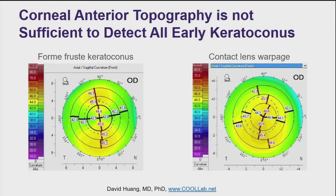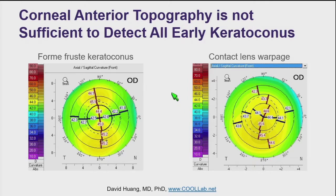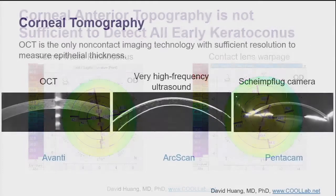I'd like to start by saying that corneal anterior topography is not always sufficient to detect early keratoconus. An example is shown here on the left — this case of forme fruste keratoconus, which is the fellow eye of a highly asymmetric keratoconus, has minimal topographic distortion that would not usually be considered diagnostic of keratoconus. Whereas other conditions such as contact lens-related corneal warpage can show significant inferior steepening that might falsely lead you to diagnose this as keratoconus.